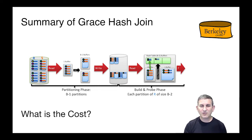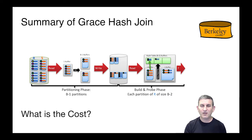To summarize Grace Hash Join: it has partitioning phases to break things into B minus one partitions, and then it has a build and probe phase where each partition of R fits in a memory space of B minus two. We then do essentially naive hash join where we stream partitions of S and probe R looking for matches.